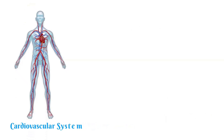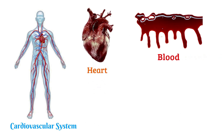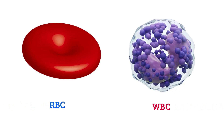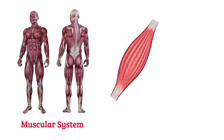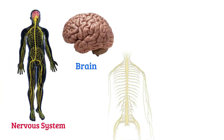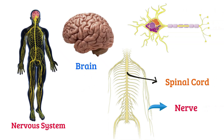Cardiovascular system: heart, blood, artery, capillary, RBC, WBC. Muscular system: muscle. Nervous system: brain, spinal cord, nerve, tendon.